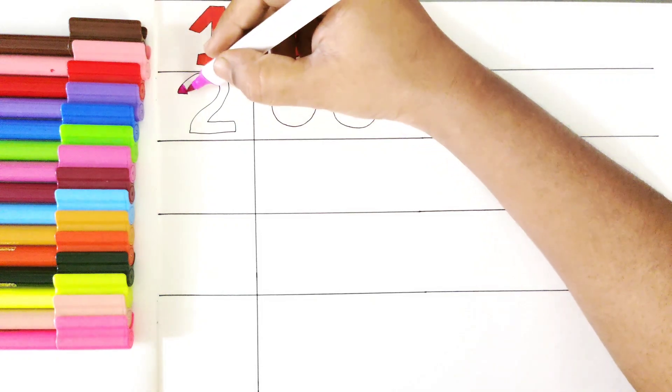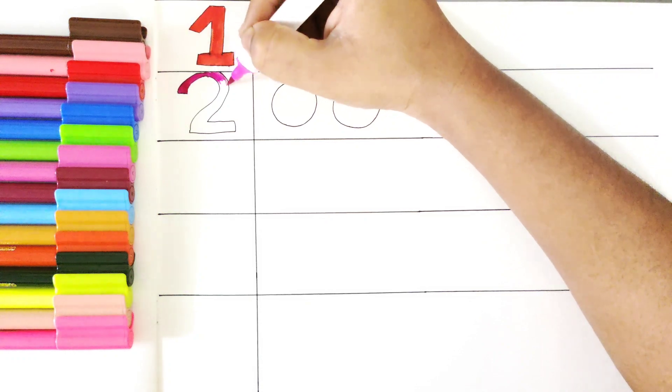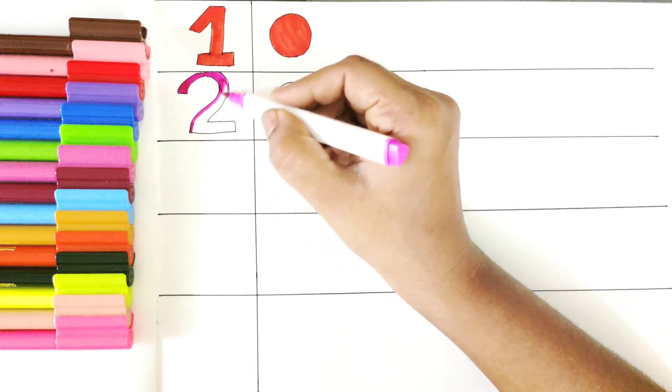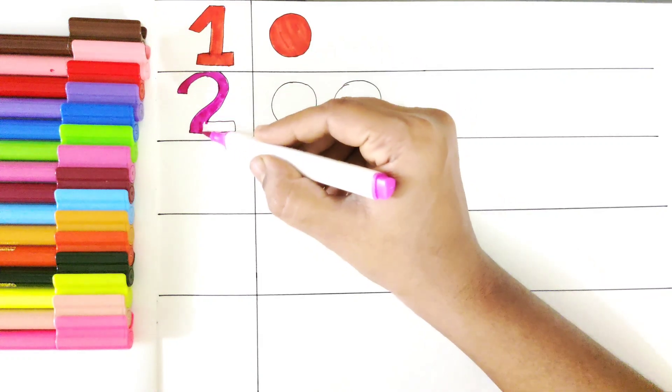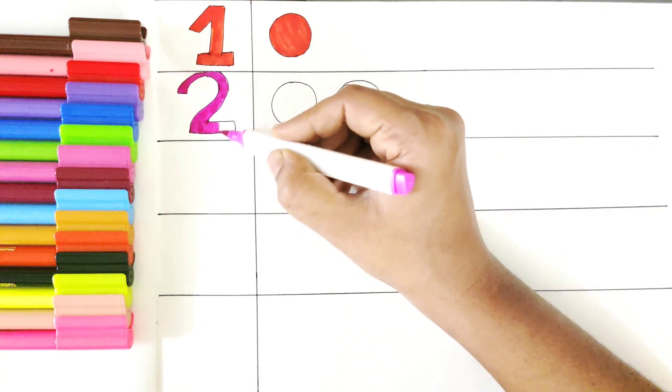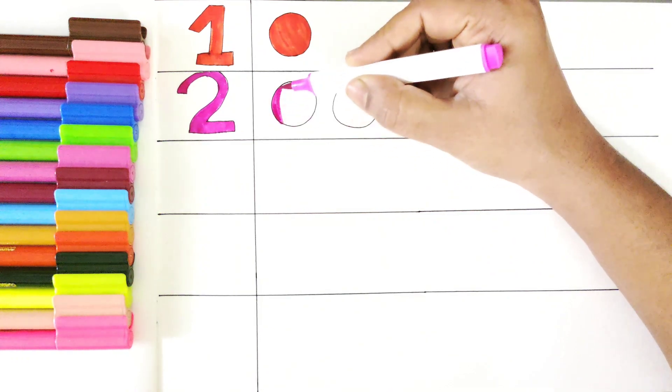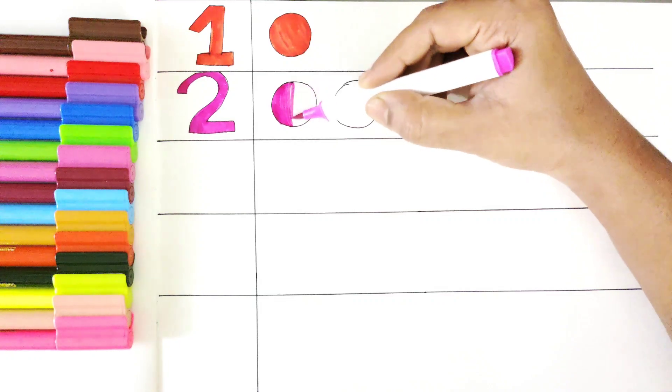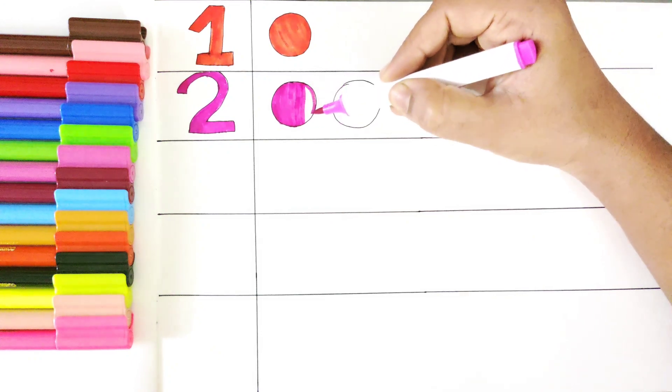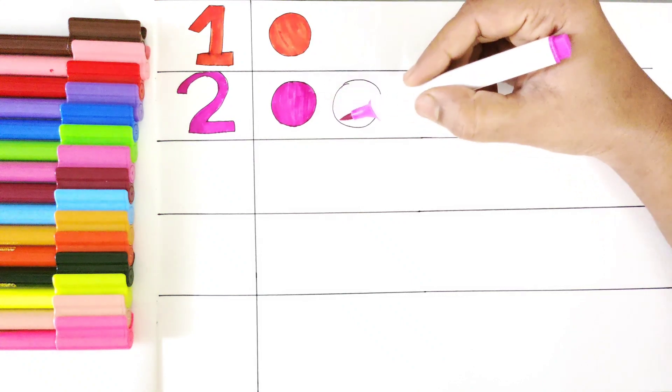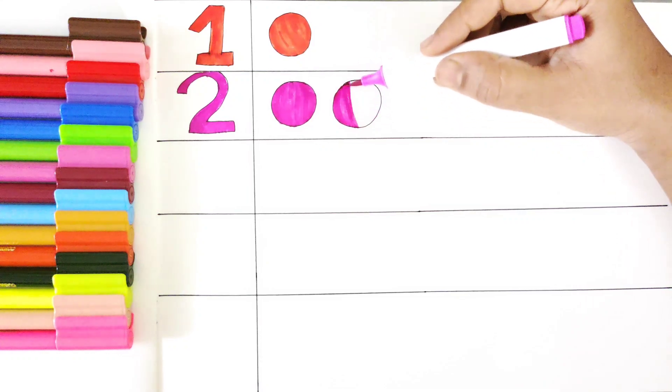We are using pink color in number two. So, the first ball is about to be ready in pink color. Now, this is the second ball. One, two.